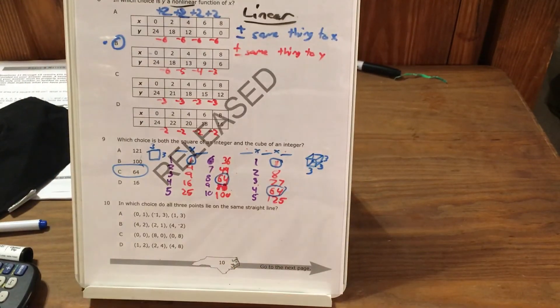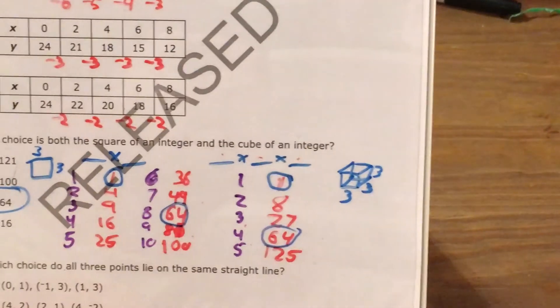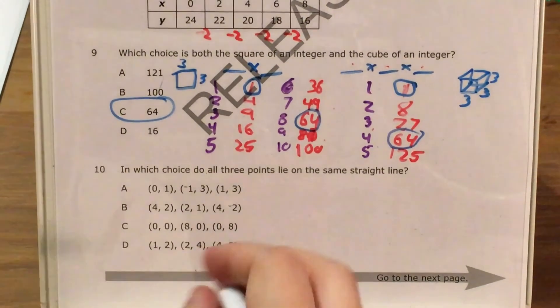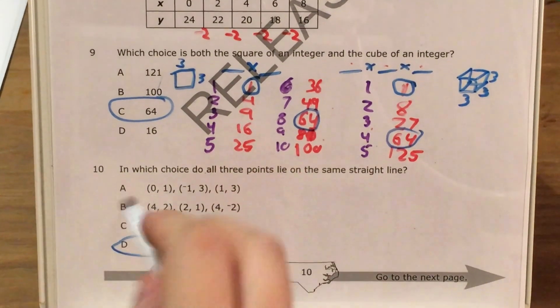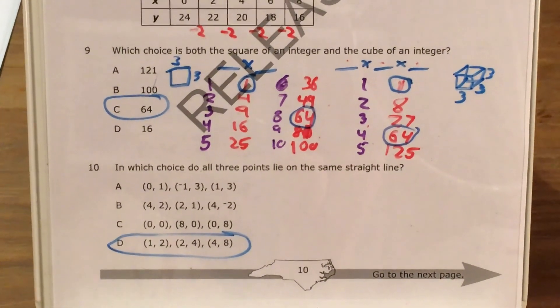So let me just go ahead, zoom in. Circle choice D. Our answer is D.